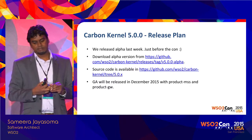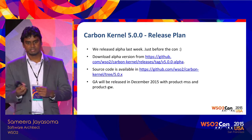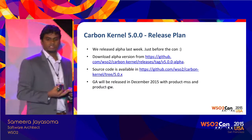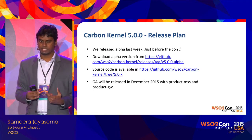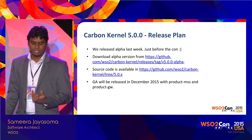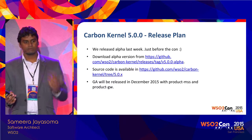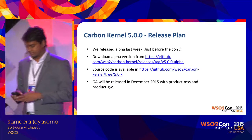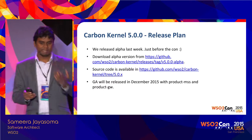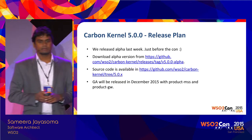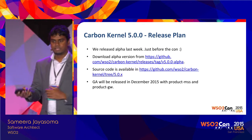The Carbon kernel 5.0 and Carbon platform release plan: we released alpha last week just before the conference, and you can download the pack and check out the source code. The plan is to release the Carbon kernel GA in Q4 this year, maybe early December. Then we'll start with Application Server, followed by middleware and core features. The GA of MSS and Gateway products will most probably also be released in December 2015.